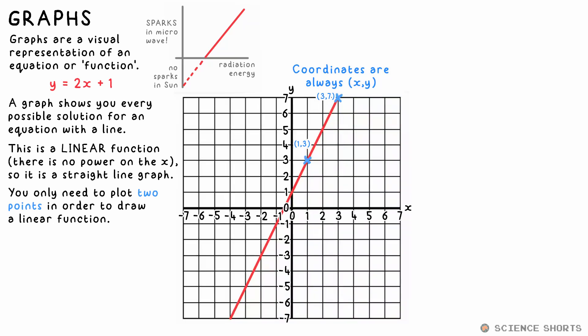The equation or function for this line is y equals two x plus one. For any value of x we put in there, the equation tells us what y will be. What is y equal to when x is one? That's three. That's why we have a point there.